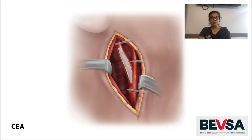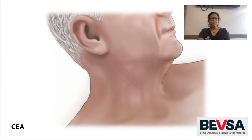Once all the plaque has been removed, we then sew a patch on the artery so the artery does not get narrowed. Once that has been completed, we then unclamp the artery to allow blood flow back into the brain through the newly constructed carotid artery with a much wider lumen.